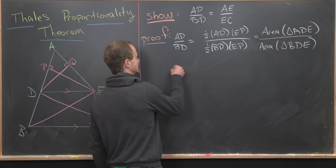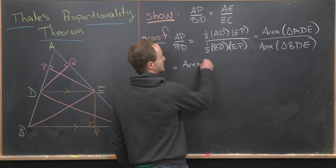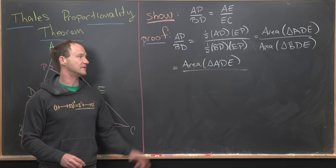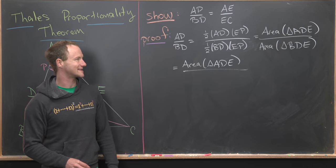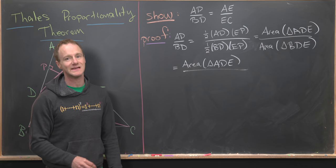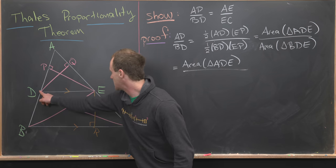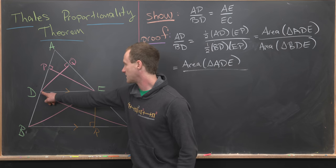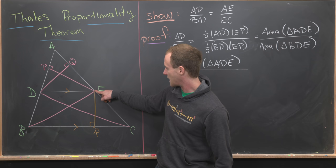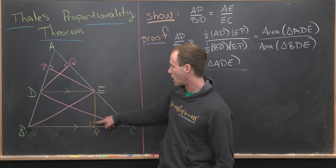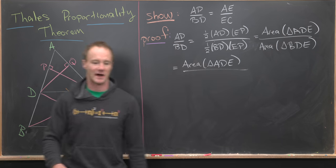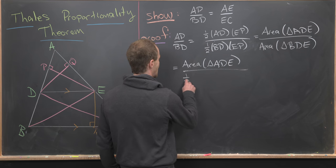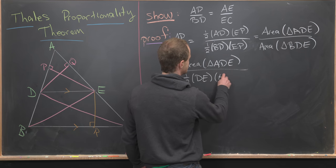Now I'm going to leave the numerator as is and calculate the area of this triangle in the denominator slightly differently. Triangle BDE - notice we can also write that as the length of line segment DE, and then our altitude would be ER. We have to multiply by a half, so that's one half DE times ER.